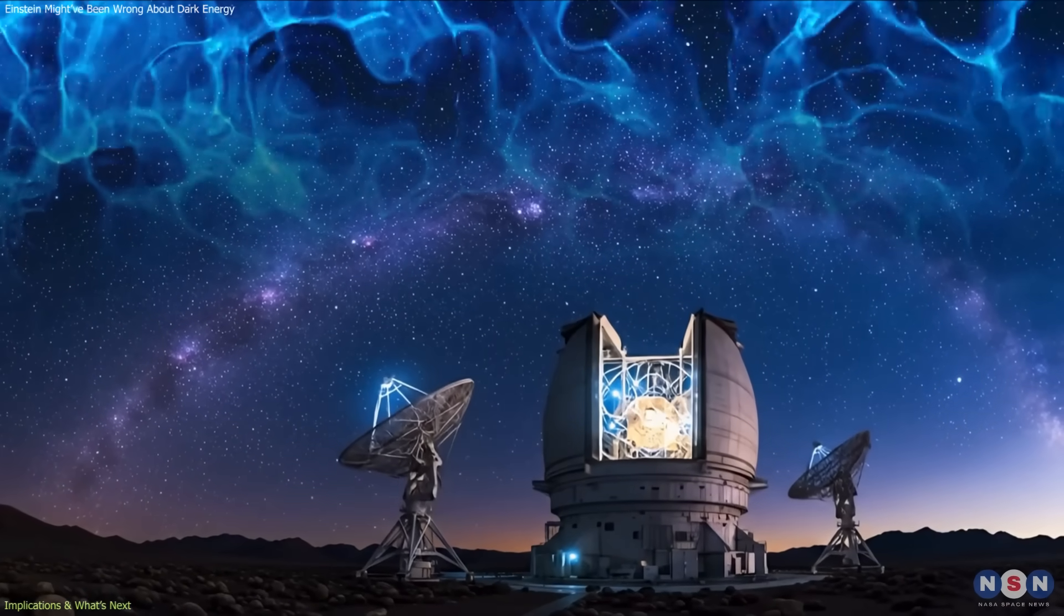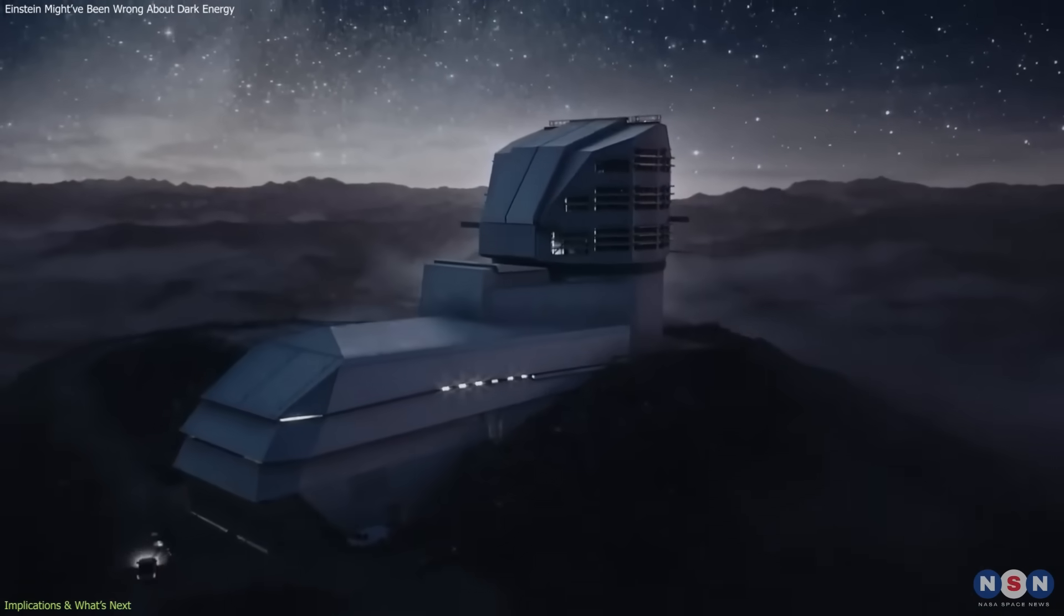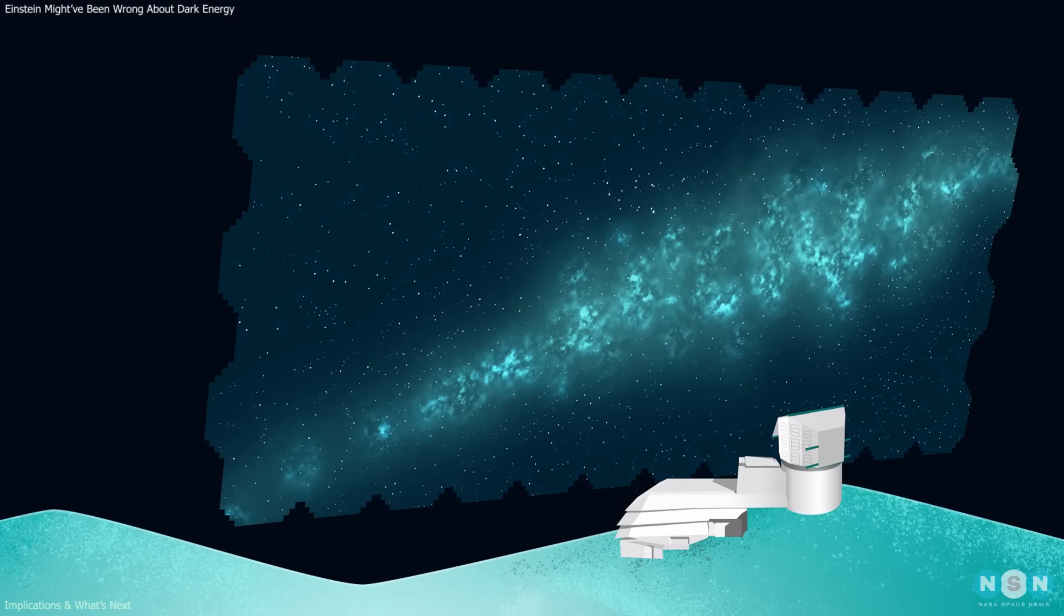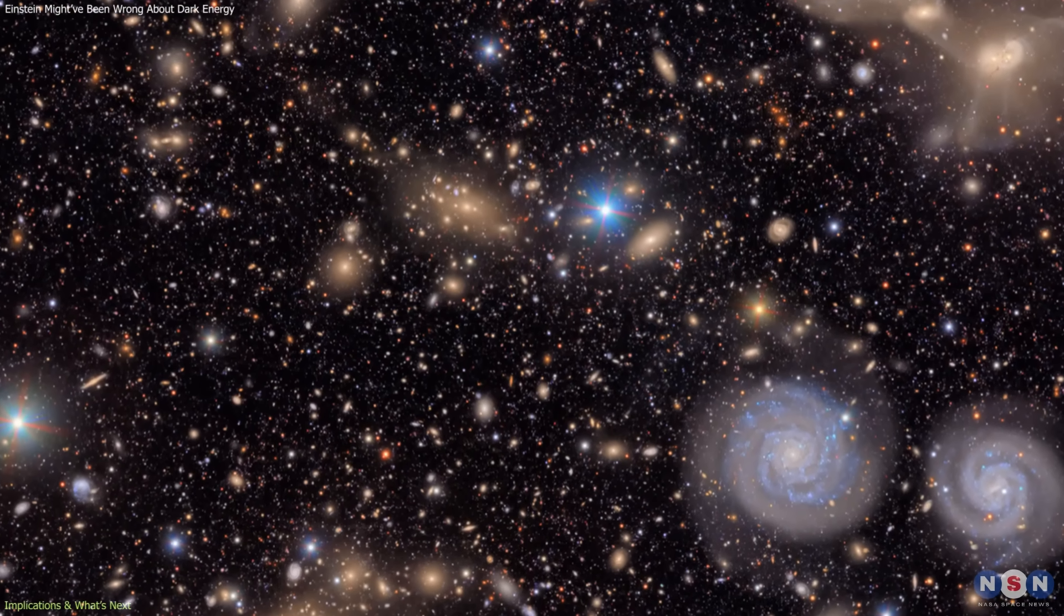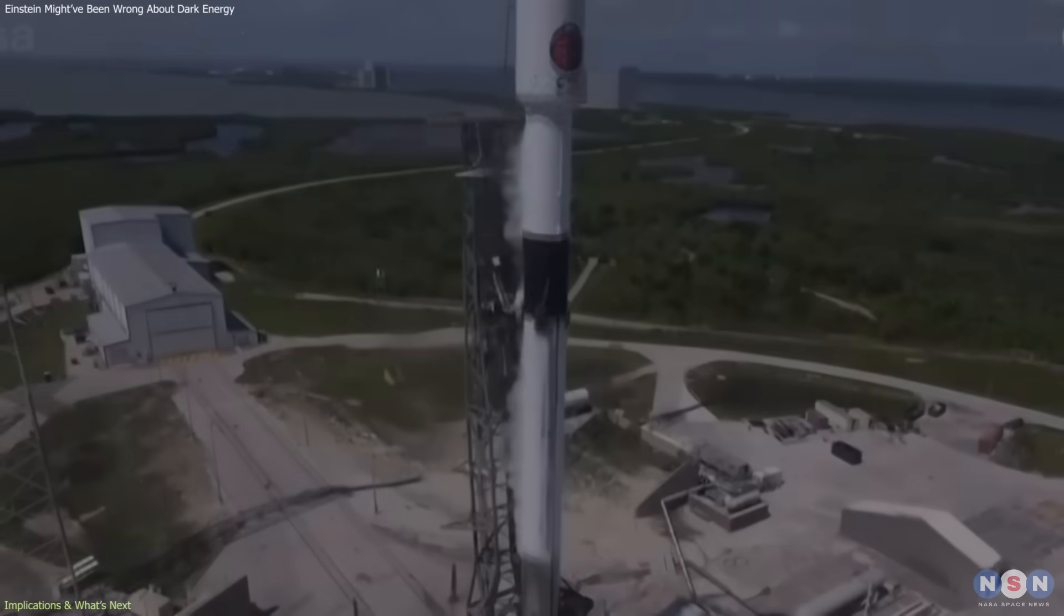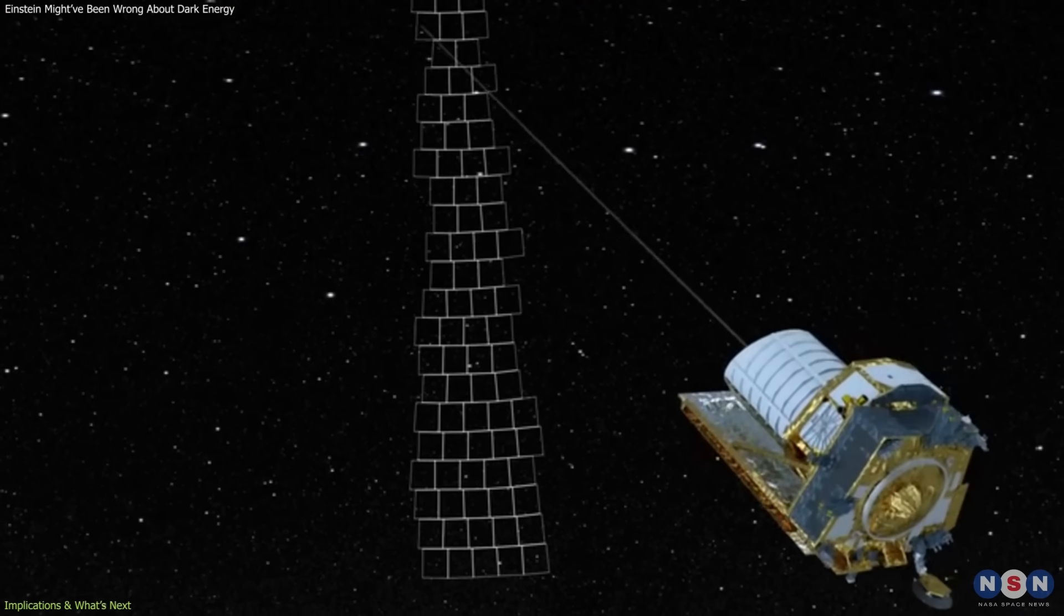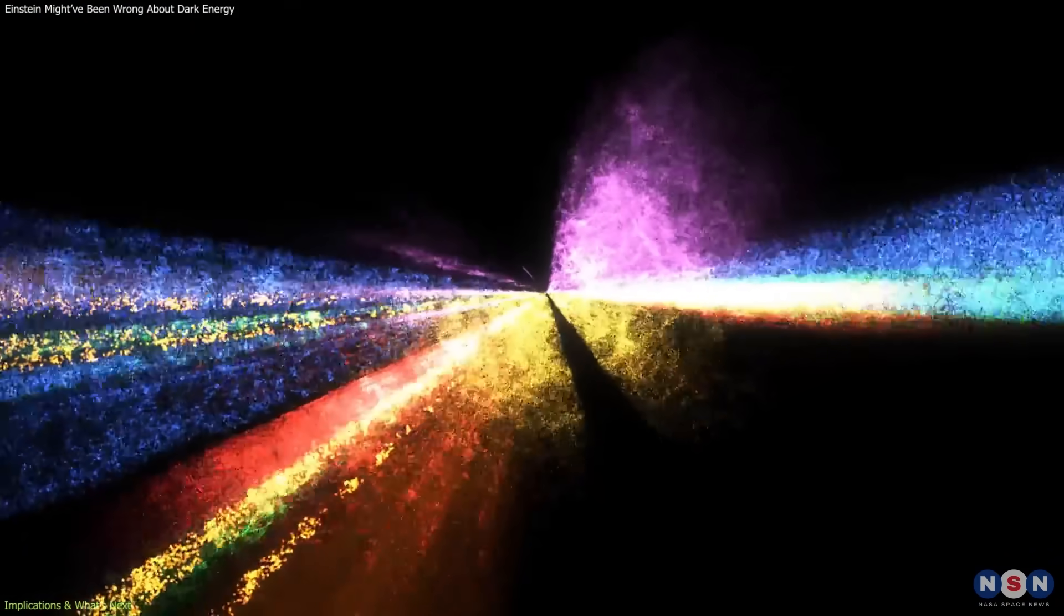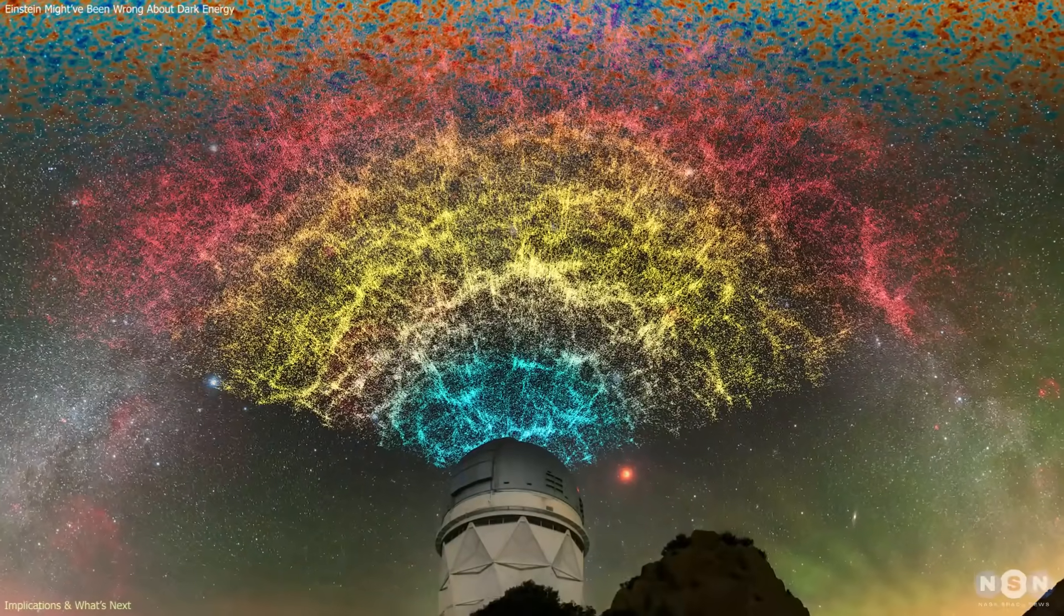Fortunately, the tools to do that are arriving now. The Vera Rubin Observatory in Chile will soon begin its Legacy Survey of Space and Time, LSST, tracking billions of galaxies and supernovae to map how the expansion rate evolves. The European Space Agency's Euclid Telescope, launched in 2023, is already mapping the geometry of the universe in exquisite detail. DESI will continue collecting spectroscopic data that trace the three-dimensional structure of cosmic matter. Together, these instruments will provide a decisive test.